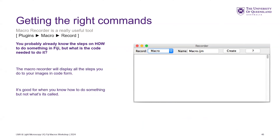You would use this when you know how to do something but need the code. Say you're writing a script and you want to open an image and max project it. I showed you the full command for max projection before. You could fumble your way through with autocomplete to find it, but the easiest is to just have the recorder running and open an image — it'll do all the steps and give you all the commands.